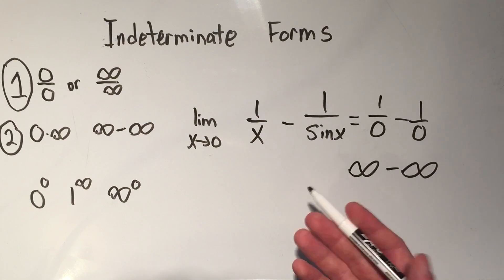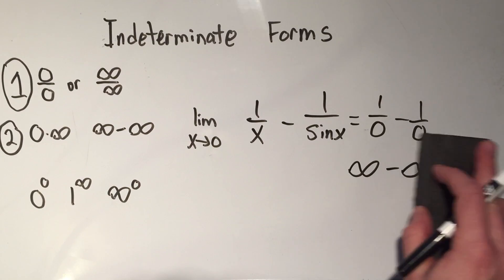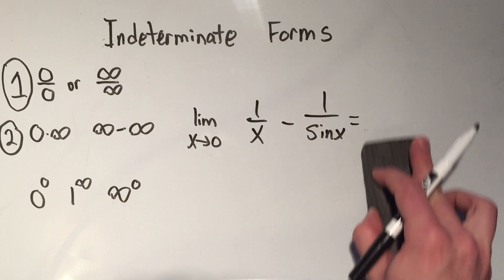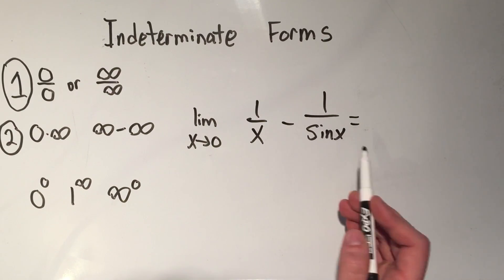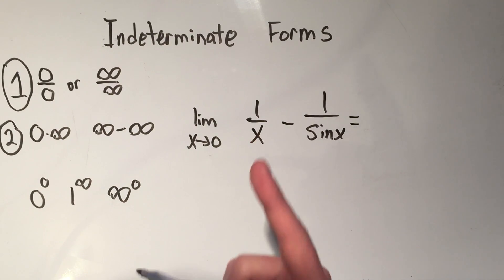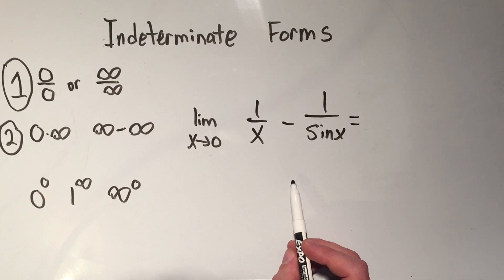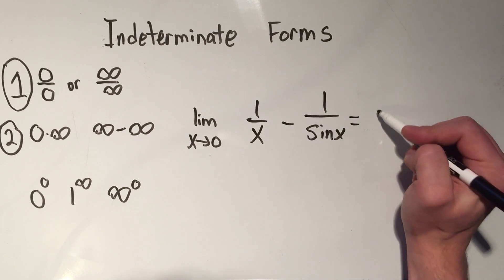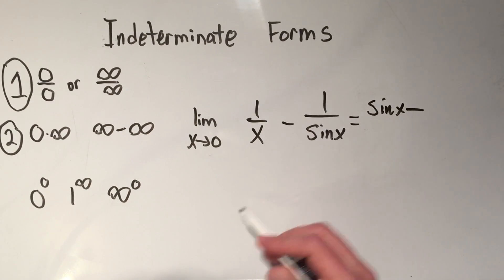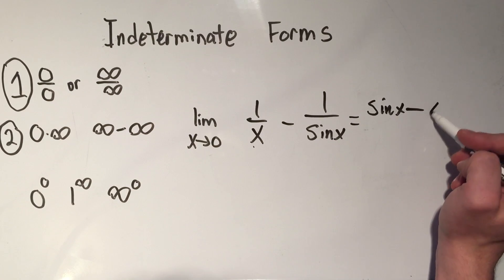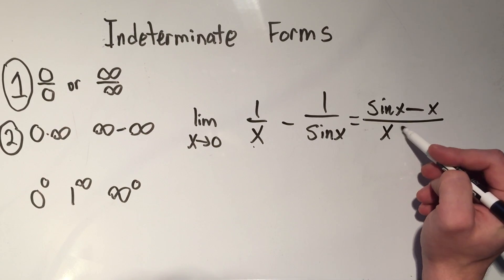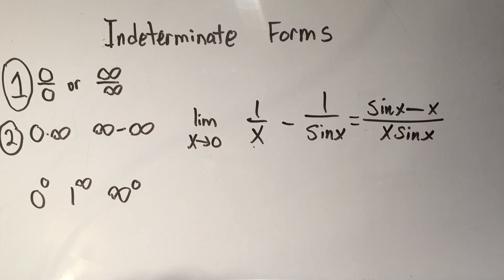And so your strategy for this is to combine these two things somehow. You want to make it a single fraction instead of two different fractions. So you could just combine these two fractions by cross multiplying: one times sine is sine, minus in the middle x times one is x, and then you multiply the denominators together.